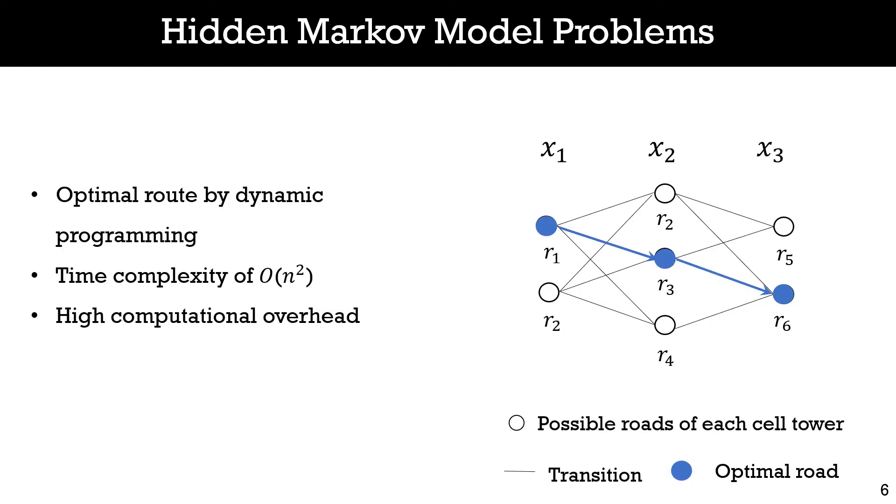Second, given the estimated probability of all possible roads, hidden Markov models rely on dynamic programming to identify the optimal road sequence, which has quadratic time complexity. This incurs high computation overhead of online inference. For cellular data, things get worse. This is because in case of large location error, the search range for candidate roads of each cell tower should be set large enough to cover the true roads, and therefore, more roads will be considered into the model.